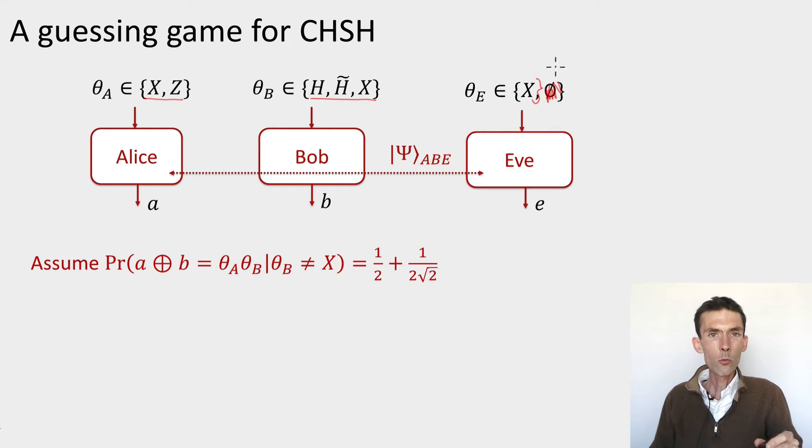She is not necessarily always provided an input. The reason I'm only giving Eve one input x is that I'm only interested in when is it the case that she'll be able to guess the outputs produced by the Alice and the Bob device when their corresponding inputs are x and x. In the other cases, these outputs will not be part of the key, so I won't ask Eve to make any prediction in that case.